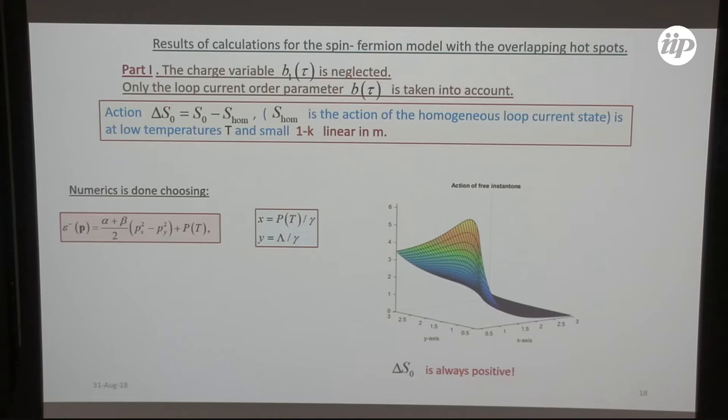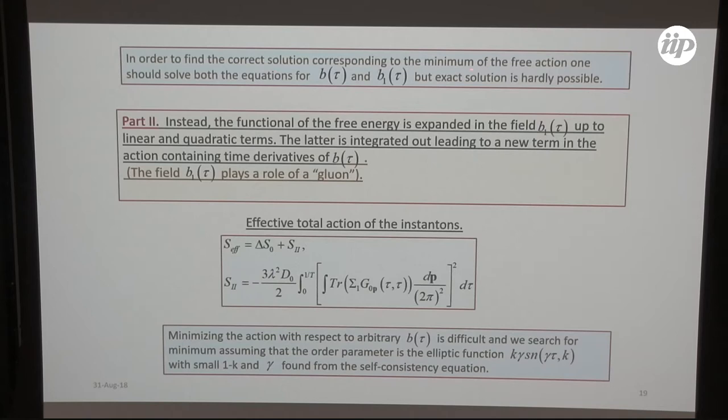One can see that if I just insert it, I get this energy as a function of these two coordinates x and y. And this difference is always positive. So no solution if you just consider this equation, just possibility of these loops. Situation changes if one takes into account this field B1, which are just charges.